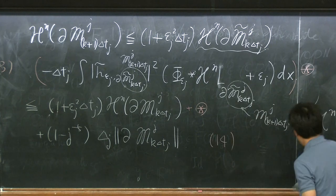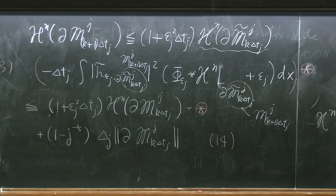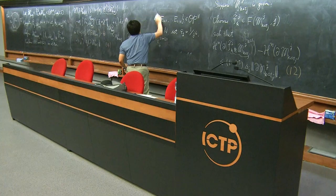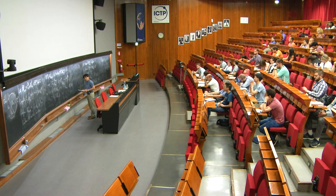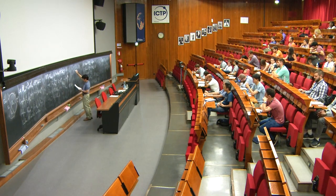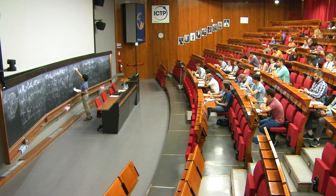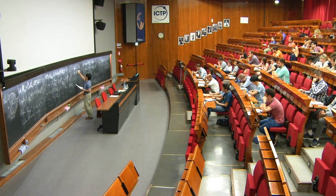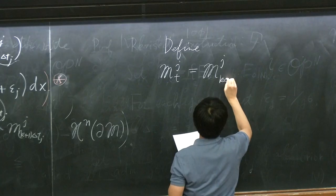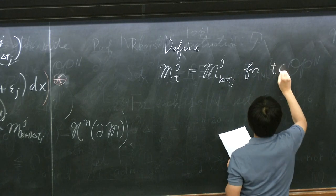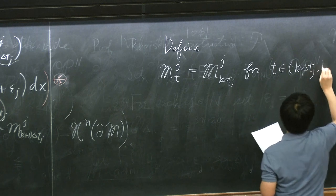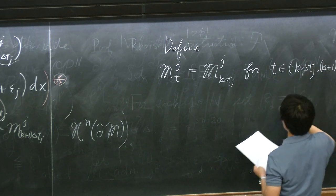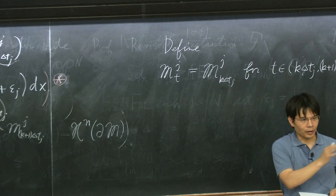At the end, this gives what we need — this is exactly the way solutions are constructed in the paper. Define M_j(t) = M_j(kδt_j) for t in [kδt_j, (k+1)δt_j) as a piecewise constant extension to all time, giving a continuous-time family.